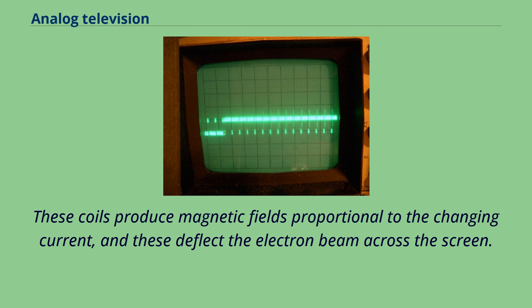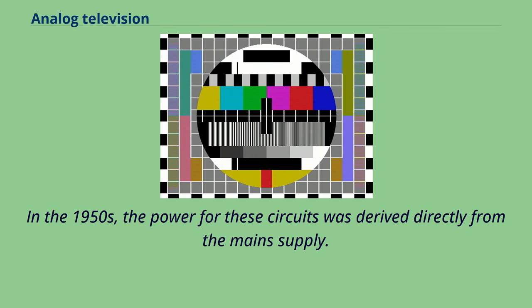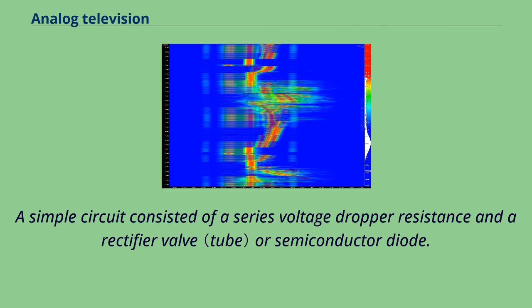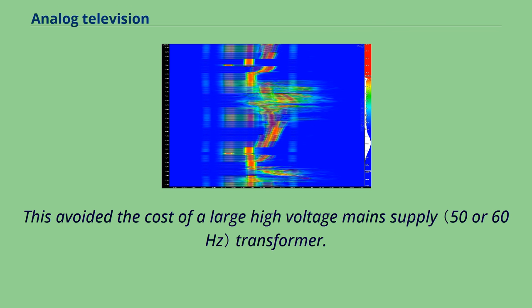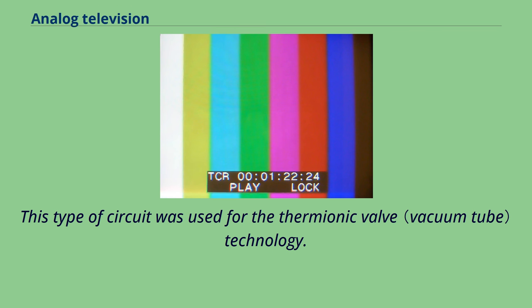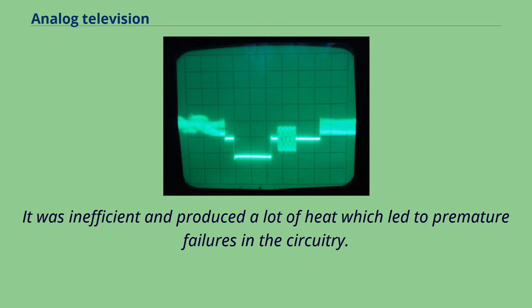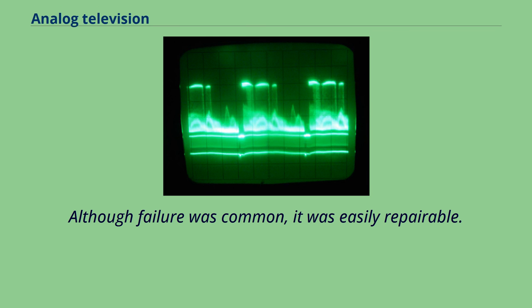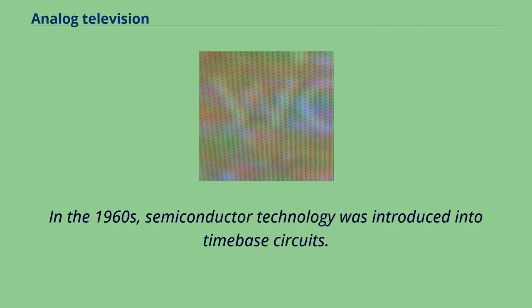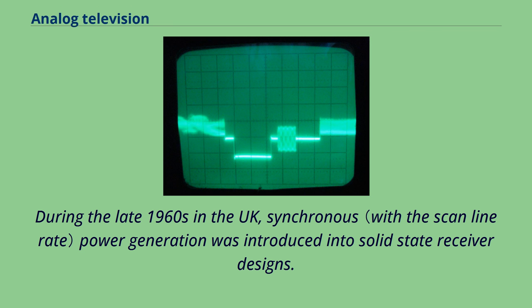In the 1960s, semiconductor technology was introduced into time-based circuits. During the late 1960s in the UK, synchronous power generation was introduced into solid-state receiver designs. In the early 1970s AC mains and line time-based, thyristor-based switching circuits were introduced. The reason for design changes arose from the electricity supply contamination problems and supply loading issues due to energy being taken from only the positive half cycle of the main supply waveform.